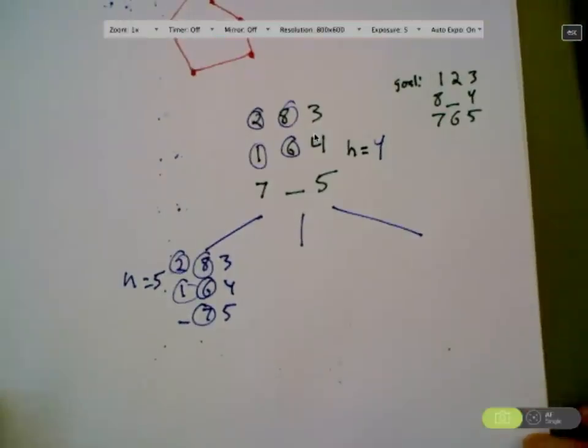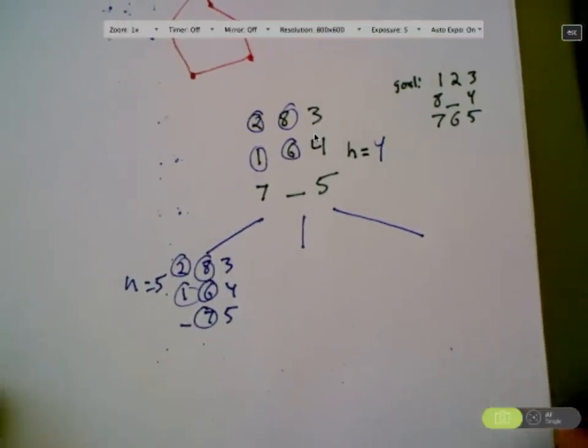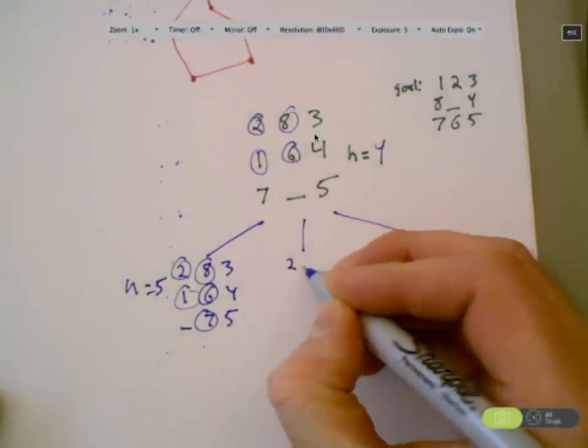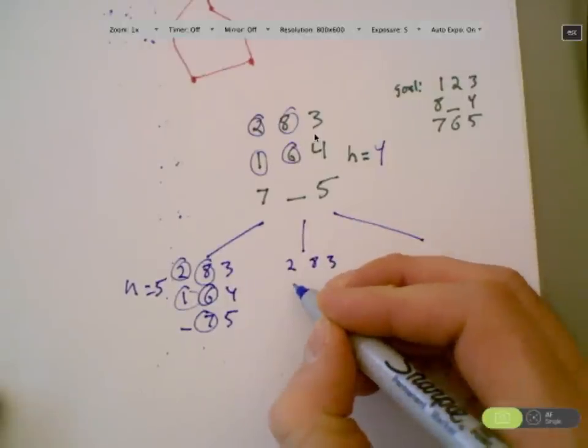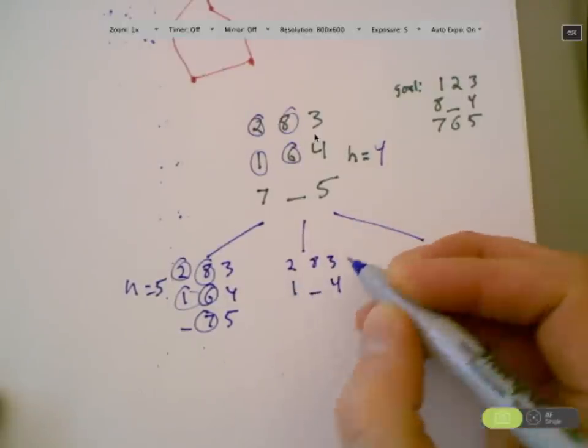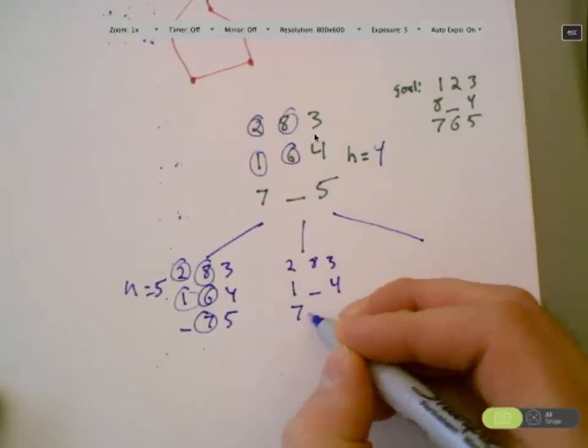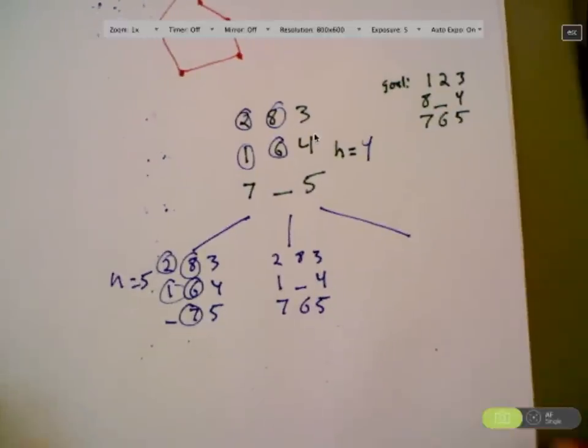Give me another kid. Tyler. 2, 8, 3, 1, blank, 4, 7, 6, 5. Yep. Excellent.